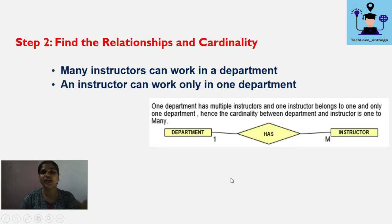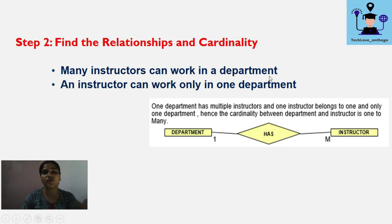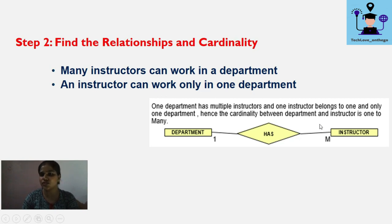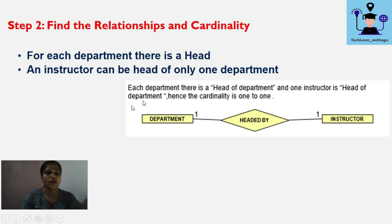Next: many instructors can work in a department, and an instructor can work in only one department. One instance of a department can have many instructors, but one instructor instance can belong to only one department. Therefore, the Department-to-Instructor relationship is one-to-many.